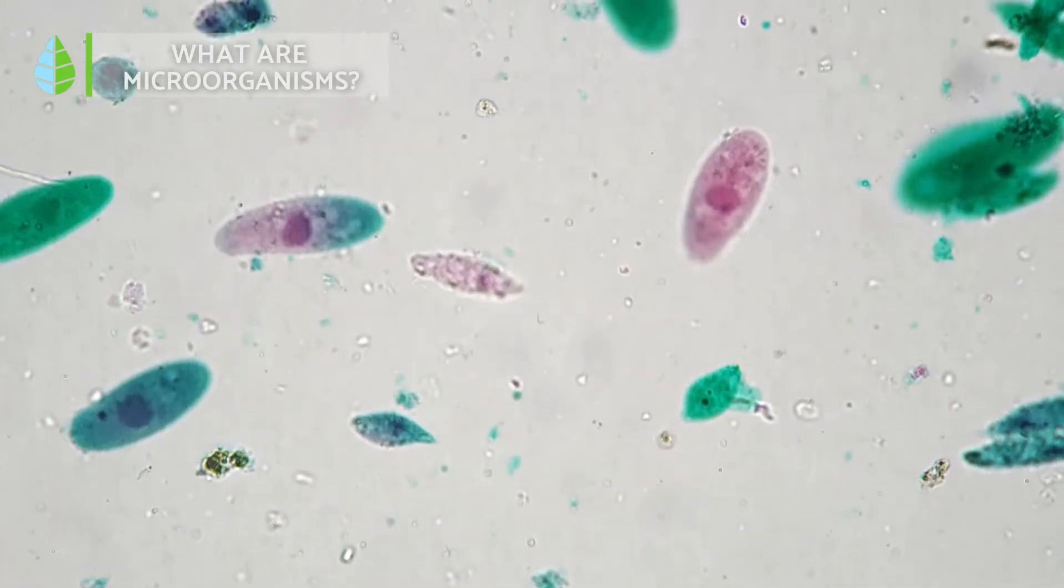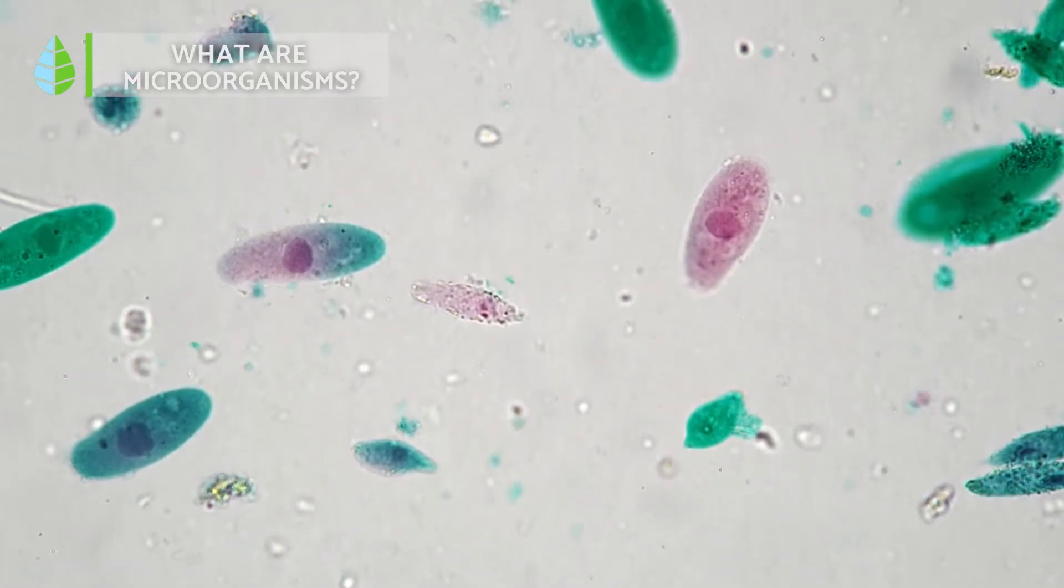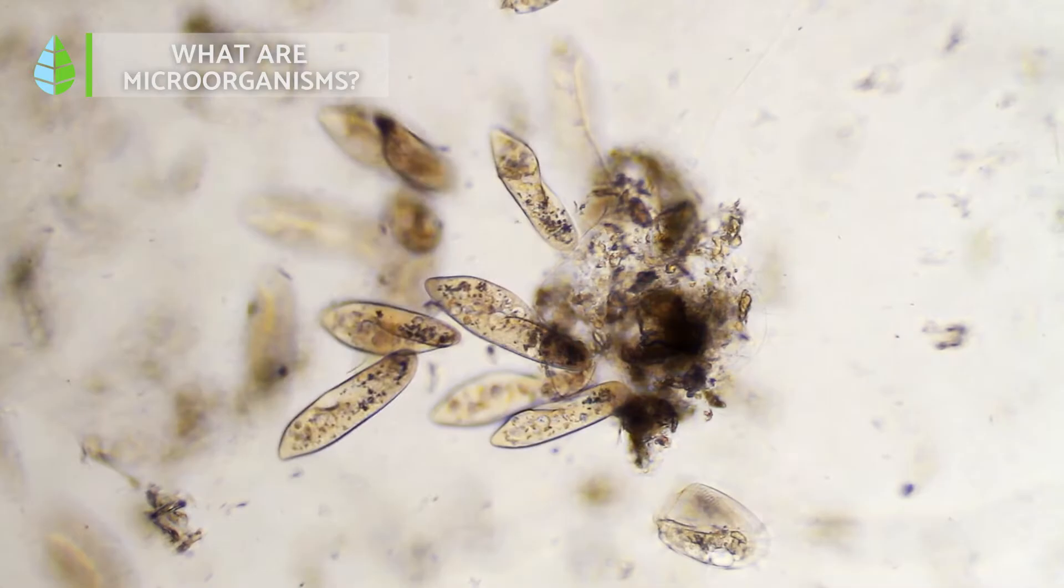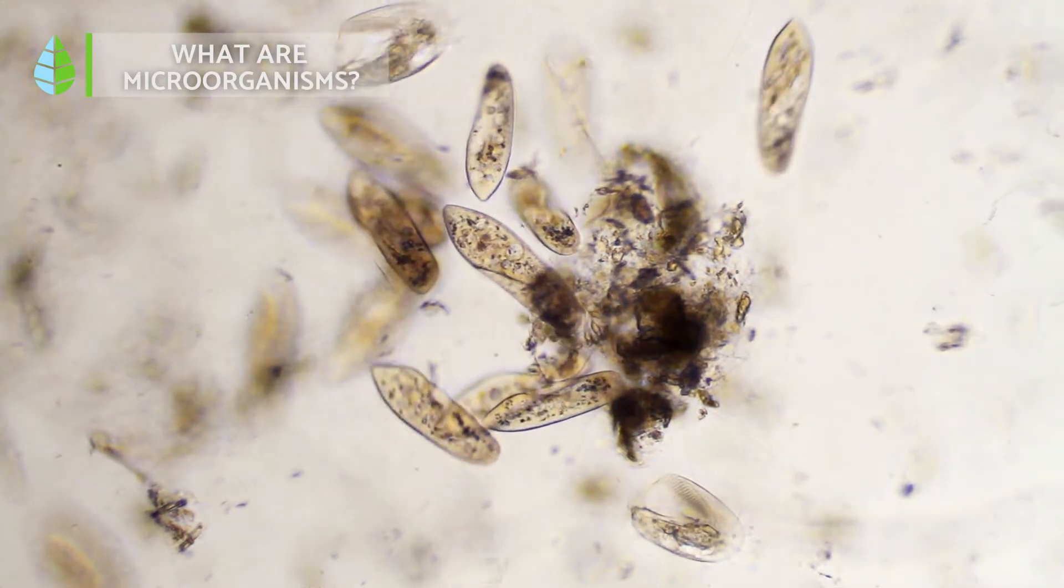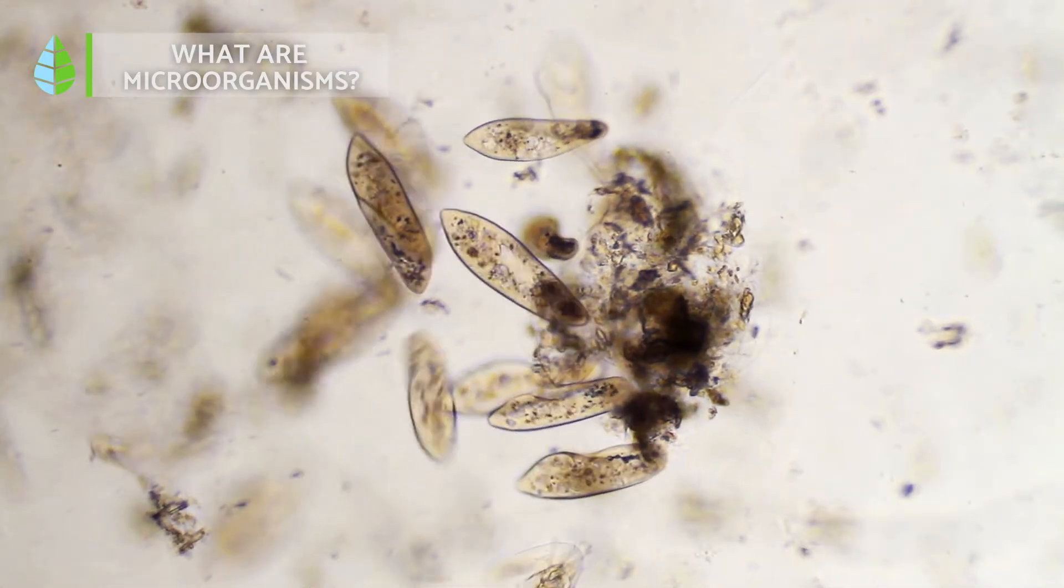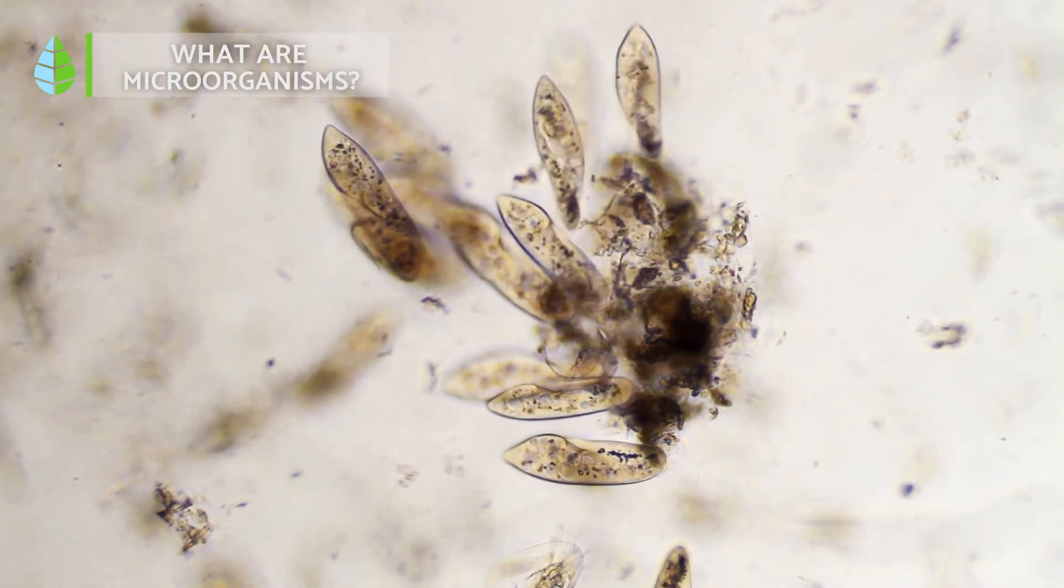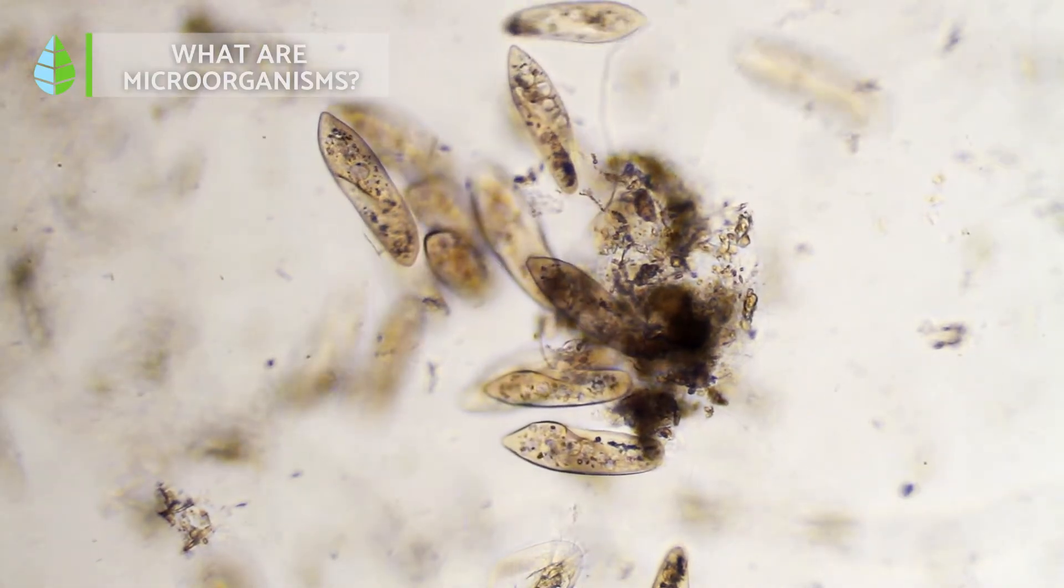Microorganisms come in a diverse range of forms, including single-celled, also called unicellular, and multicellular. That means there are two main classifications for microorganisms: prokaryotes and eukaryotes.